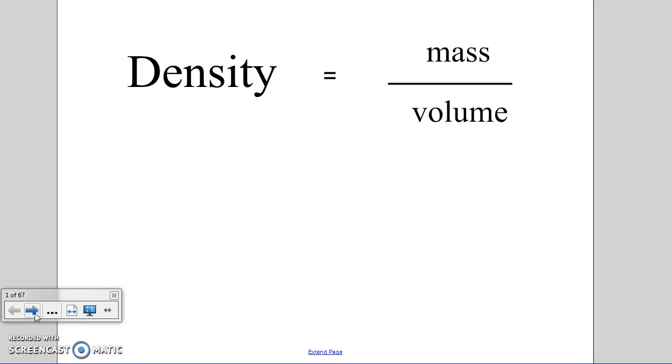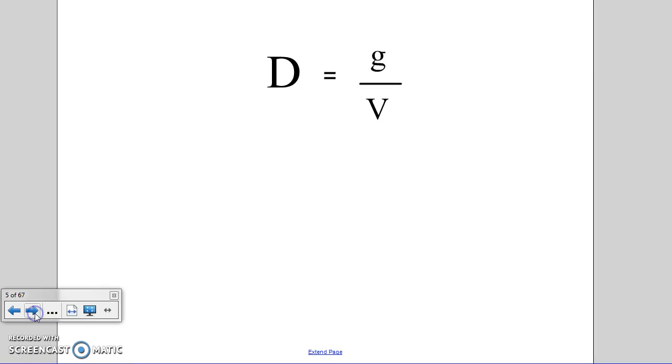We can begin by rewriting the density formula in terms of symbols. Density equals mass over volume, which can be written as - our symbol for mass is g, our symbol for volume is capital V, and our symbol for density is D. So the entire formula can be condensed into this form: D equals g over V.